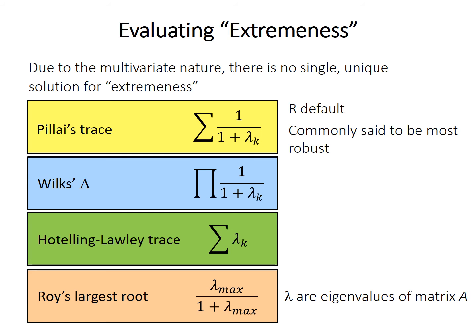As a result, there are at least four different statistics that have been devised, each using the eigenvalues of matrix A. Wilkes' lambda is apparently a commonly used one. Pillai's trace is the default in R and is often said to be fairly robust, though there is some debate over this. For our purposes, you can just use Pillai's trace for the class — it's the default in R, and that's simple enough.